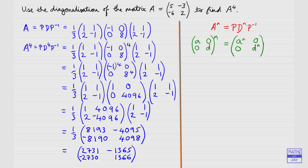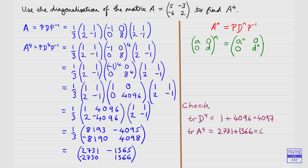A nice way to check that this is correct is to verify that the elements on the main diagonal of A^4 are consistent with D^4. Specifically, the trace of D^4 equals 1 + 4096 = 4097. The trace of our computed matrix A^4 is 2731 + 1366 = 4097 as well. So they match.